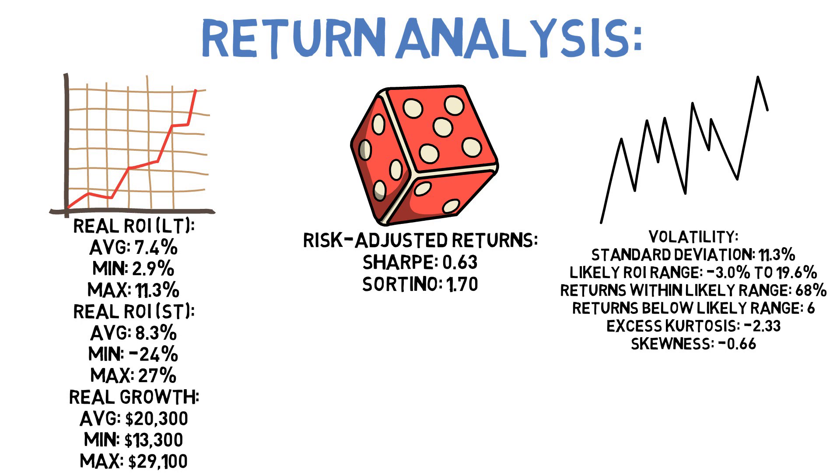The strategy had a skewness of negative 0.66, suggesting that the majority of its returns would actually be above the long-term averages, with a few returns coming in below those averages to drag it down. And as we see in the loss figures, that does appear to be the case.